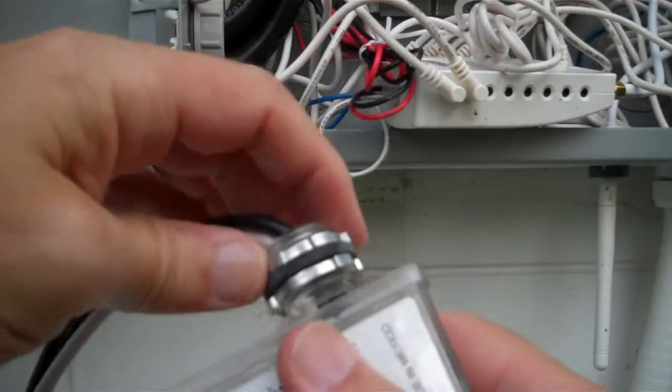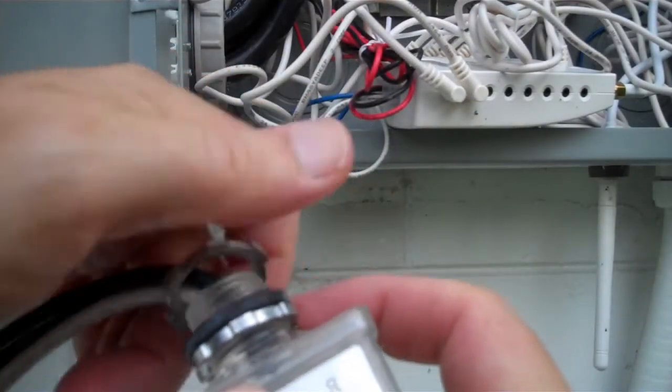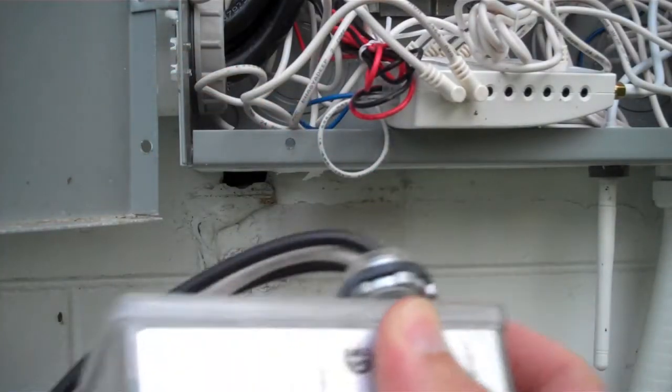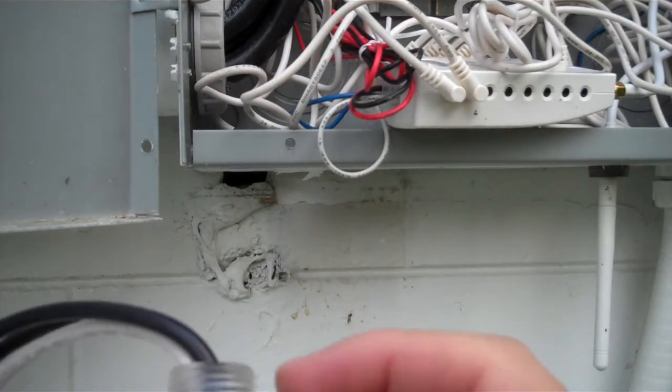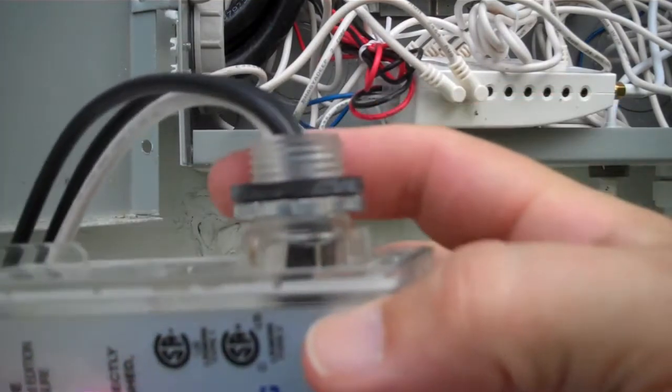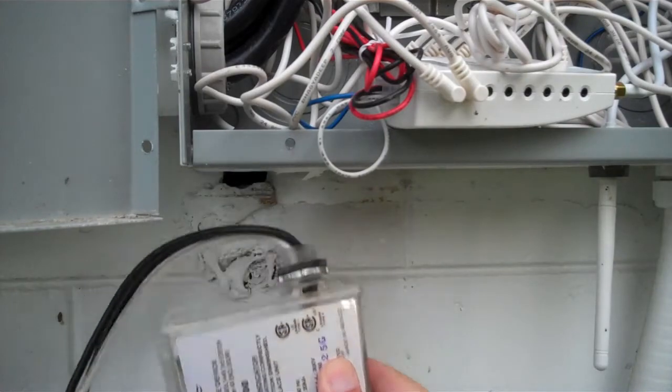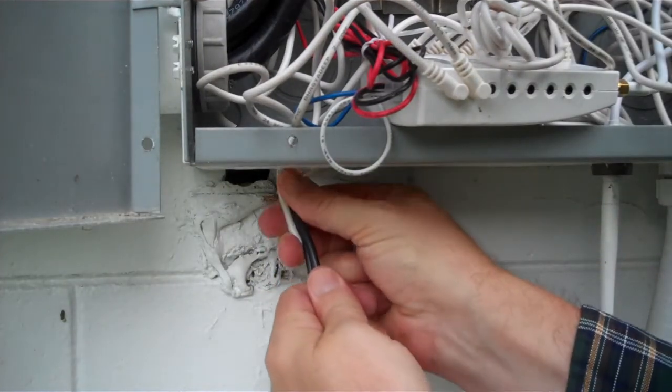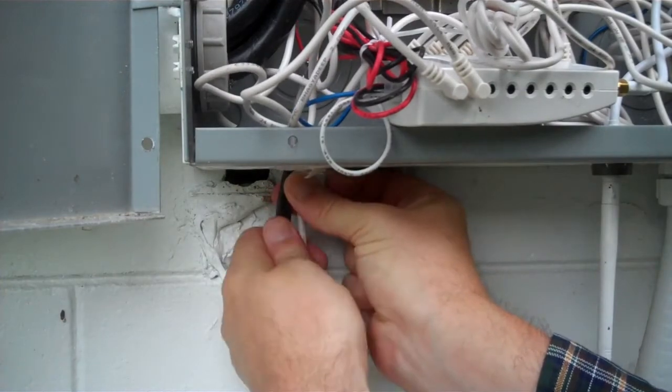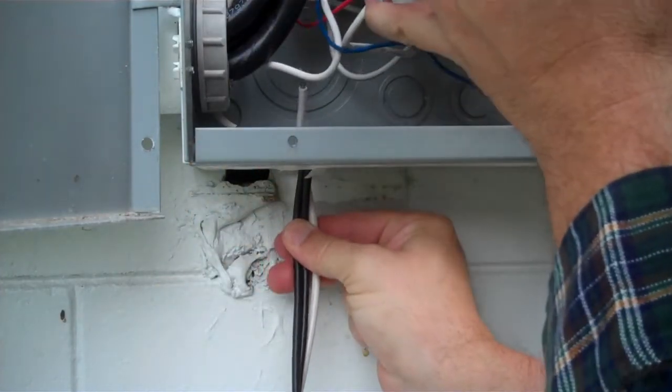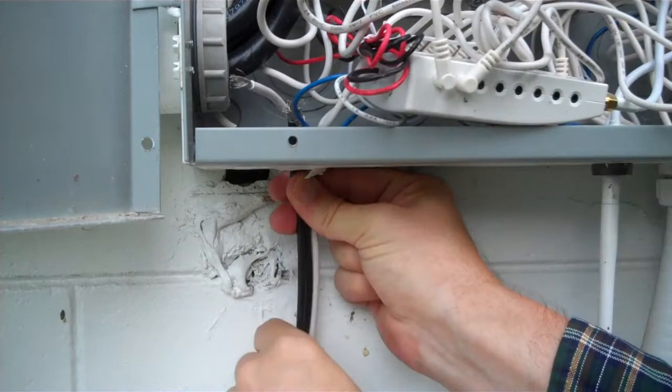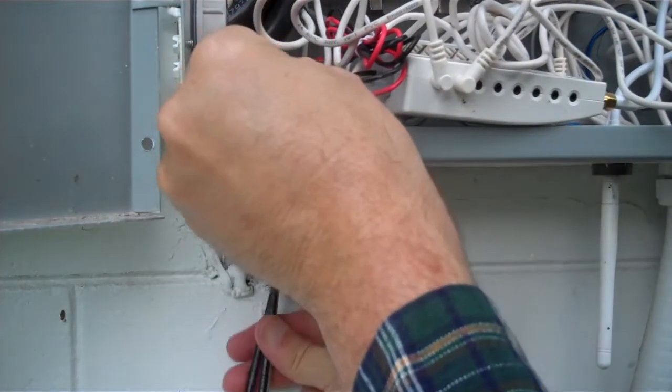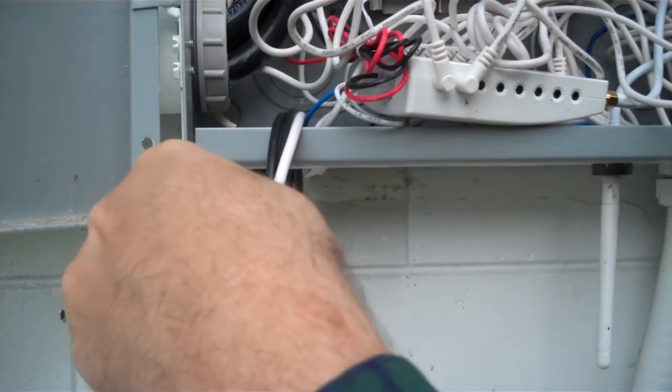All right, when putting the new one in, you want to have this rubber gasket here against the bottom there. Since we're working with a live box, we want to make sure these wires are coming out of the box and not up into something that's live while we're working.